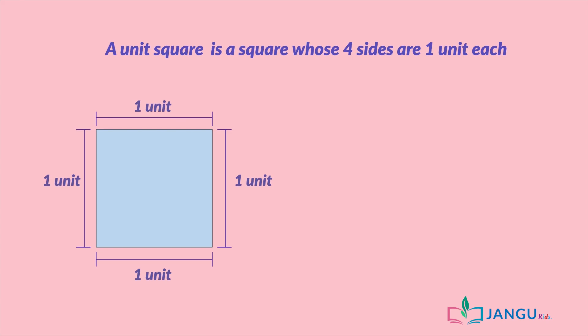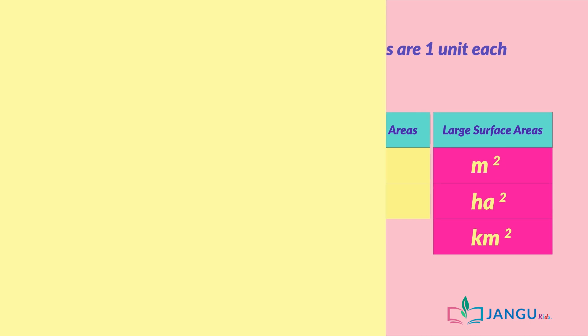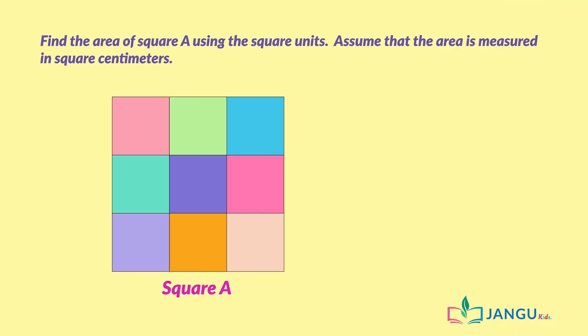Area of small surfaces is measured in square centimeters or square millimeters, while area of large surfaces is measured in square meters, square hectares, etc. Now let's find the area of square A using the square units. Assume that the area is measured in square centimeters.